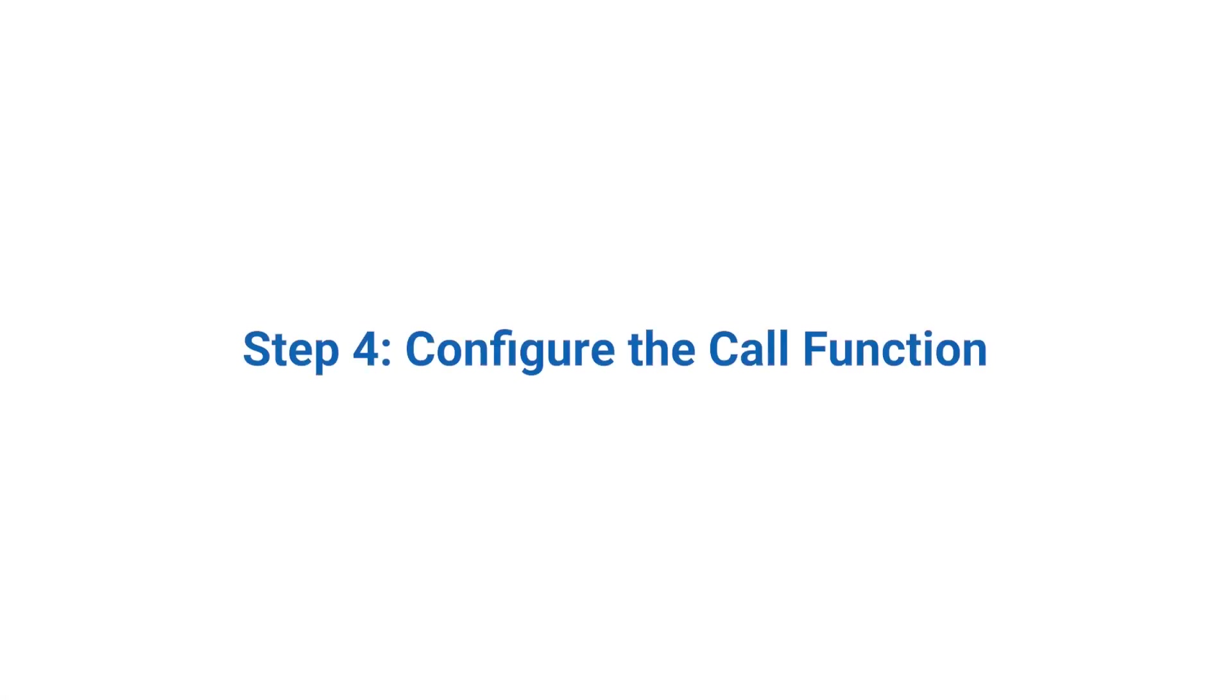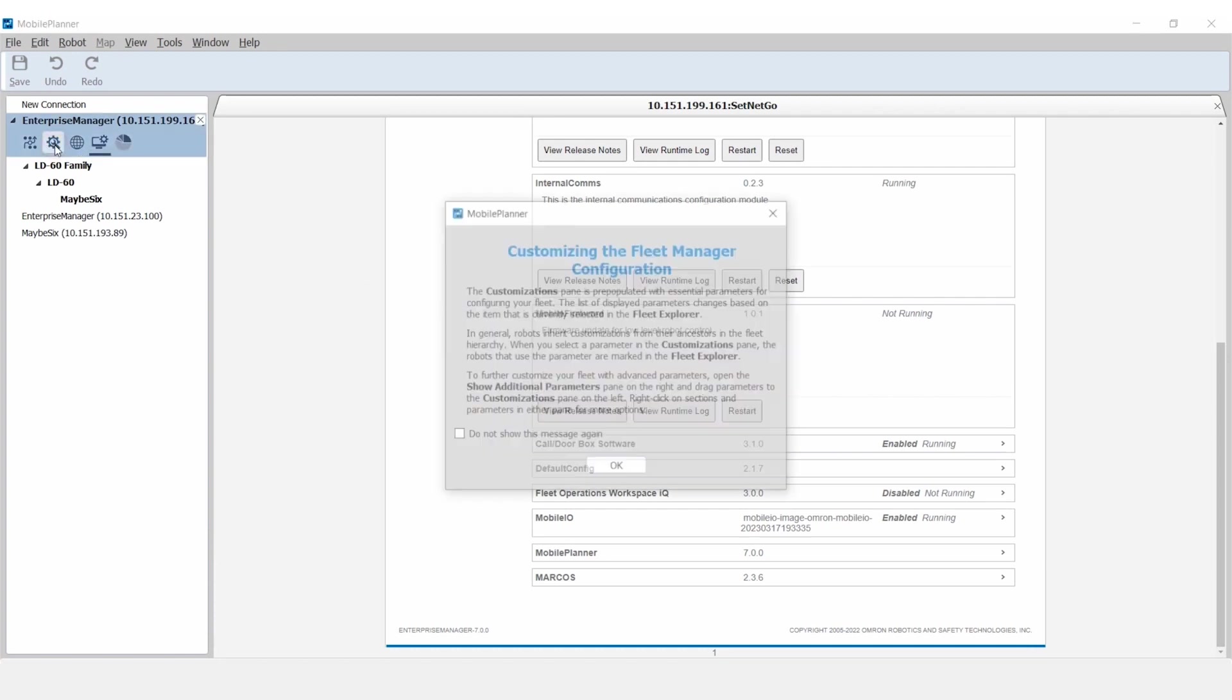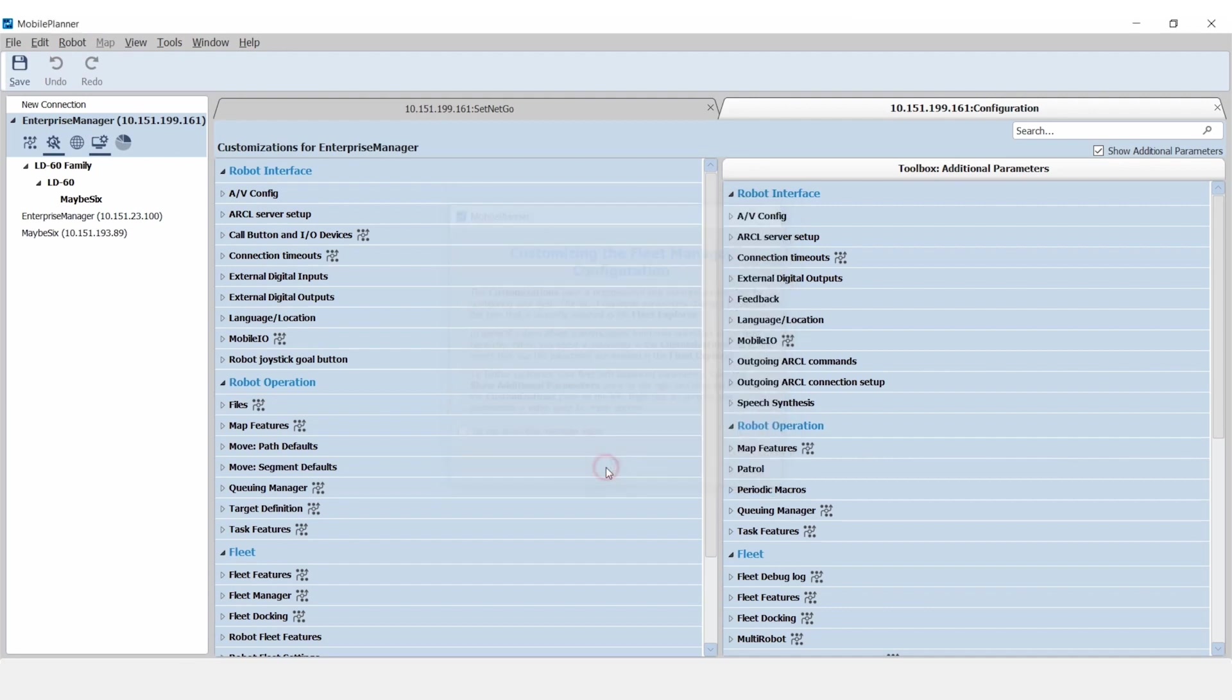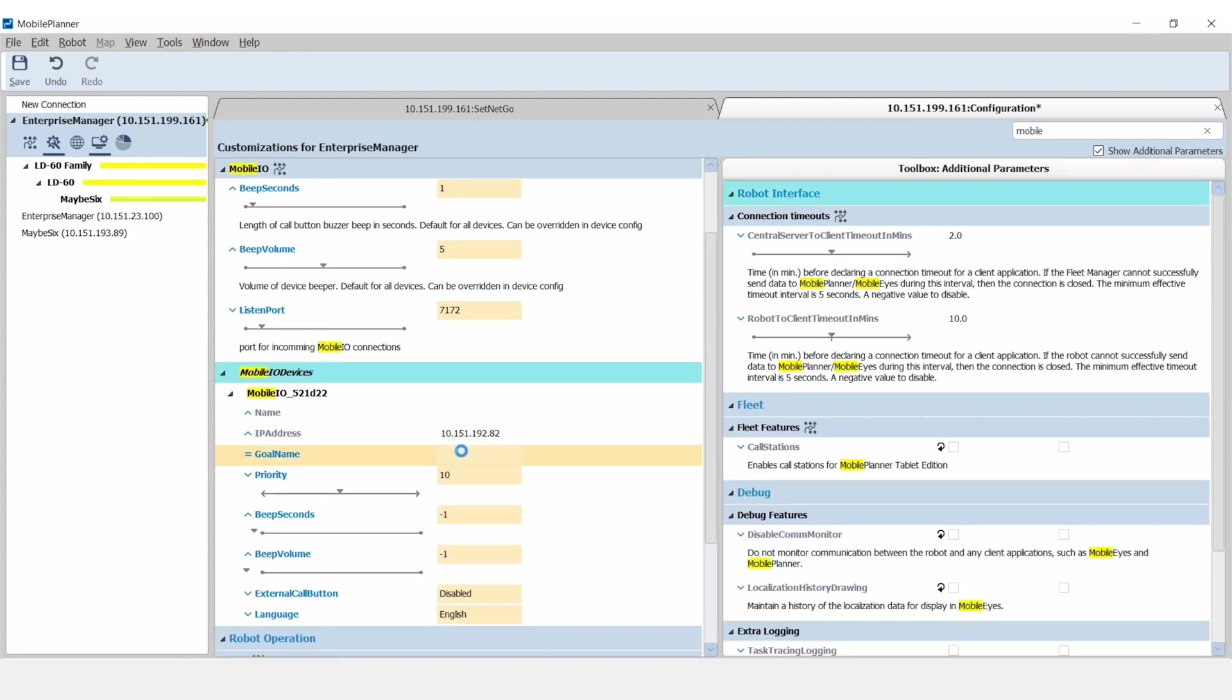Step 4. Configure the call function. In Mobile Planner, open the host's configuration tab. Navigate to the Mobile I.O. menu. Drag the device icon from the right column to the left to enable it. Select Mobile I.O. devices and find the device by matching the six-digit identifier. Populate the goal name field with the desired map goal.